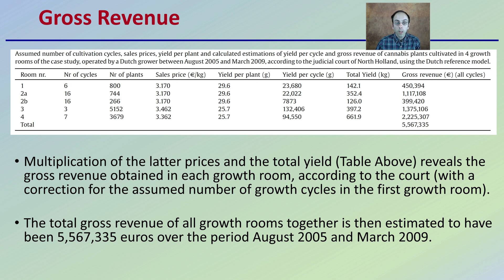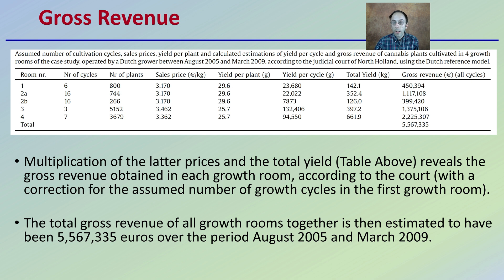The multiplication of the prices and the total yield in the table above reveals the gross revenues obtained in each growth room, according to the court, with a correction for the assumed number of growth cycles in the first growth room. There were some assumptions being made. We can see the number of plants being as low as 266 and as high as over 5,000. The total gross revenue from all grow rooms together is estimated to have been over 5.5 million euros over the period from August 6, 2005 to March 2009.